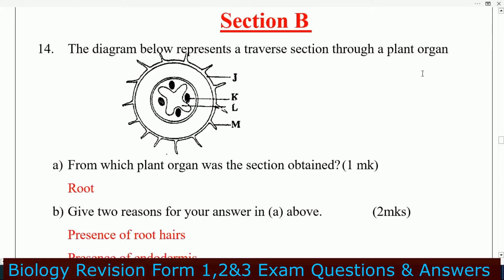Look at the diagram showing parts J, K, L, and M. You are told: from which plant organ was the section obtained? That one is roots.